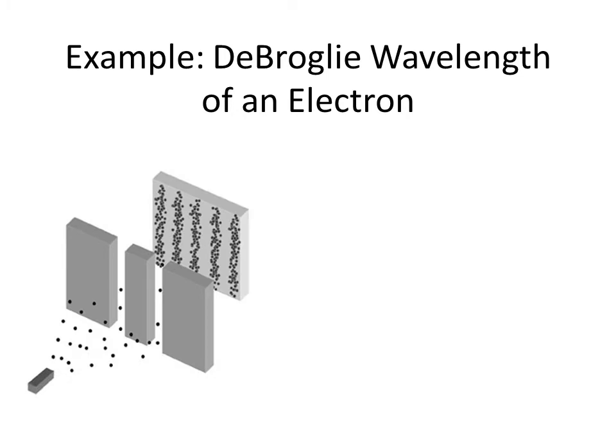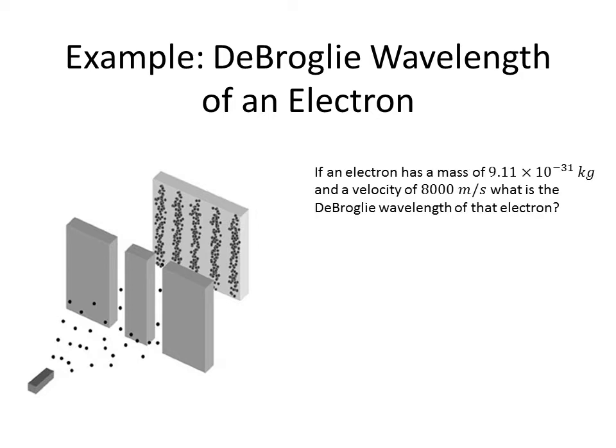Say we have some electrons that are going to eventually go through a double slit, and we could do a further problem. But we want to know, if we're going to deal with a double slit, what is the wavelength of that electron. So here we go. If an electron has a mass of 9.11 times 10 to the minus 31st kilograms, and somehow we give it a velocity of 8,000 meters per second, what's the de Broglie wavelength?